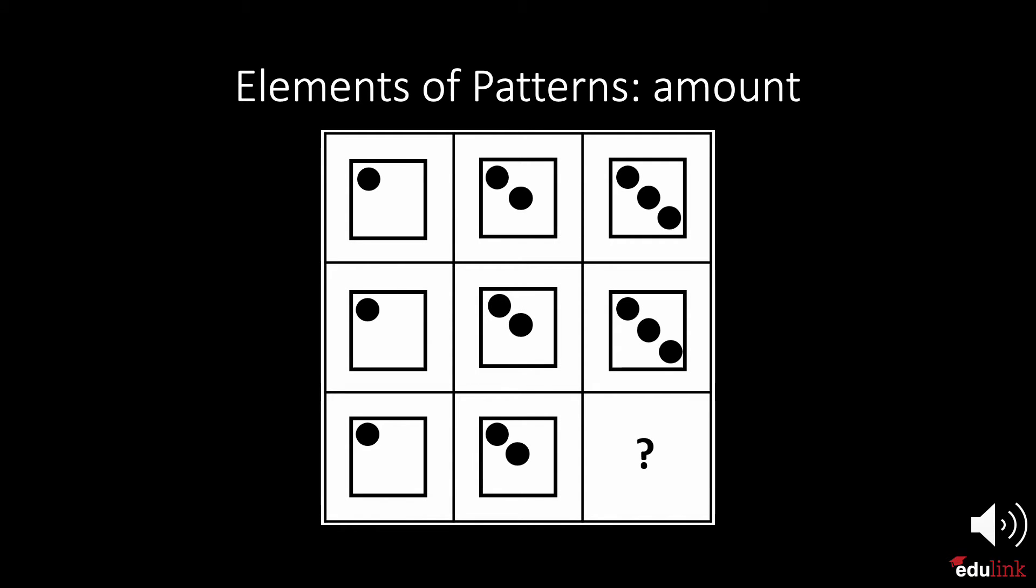Now we will look at patterns with a variation of the amount. This example demonstrates how the count can vary within a pattern. You have to pay attention to the amount within each shape. Here, the amount within the columns remains the same, always 1, 2, or 3.